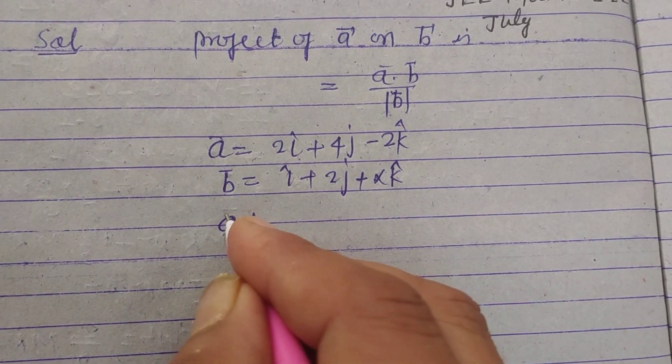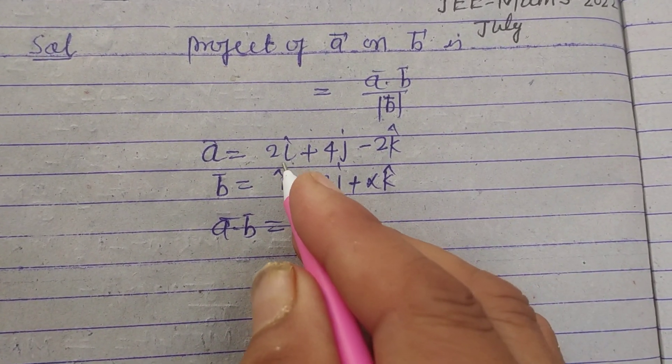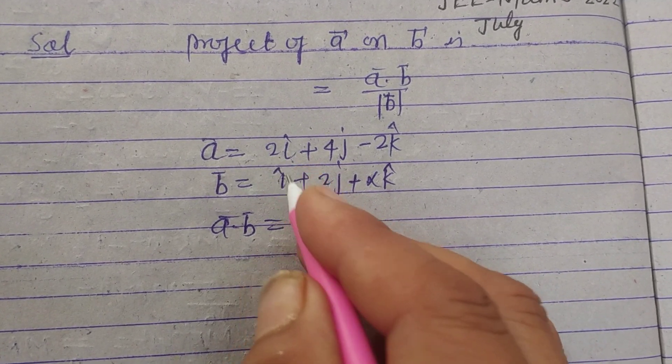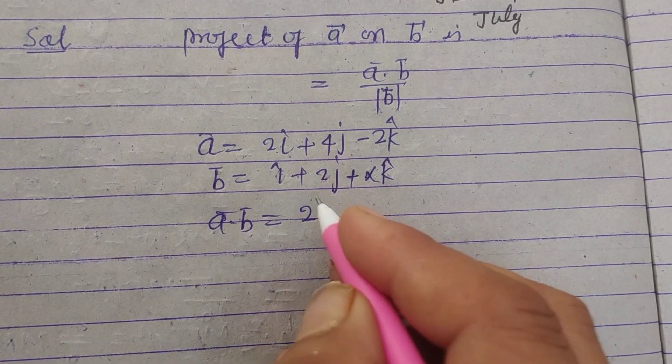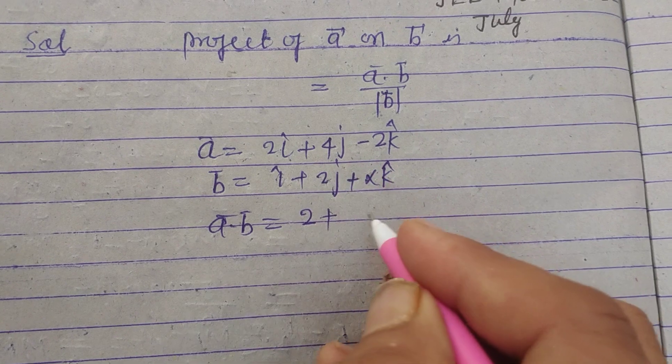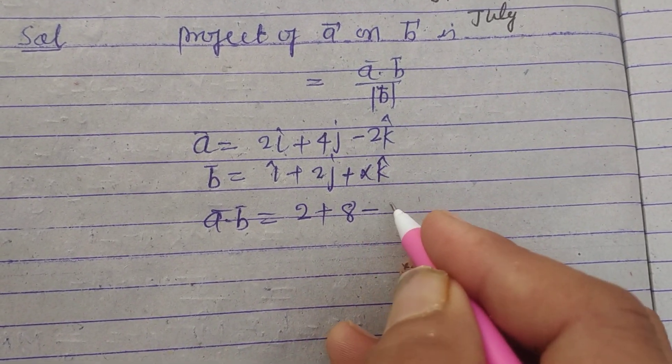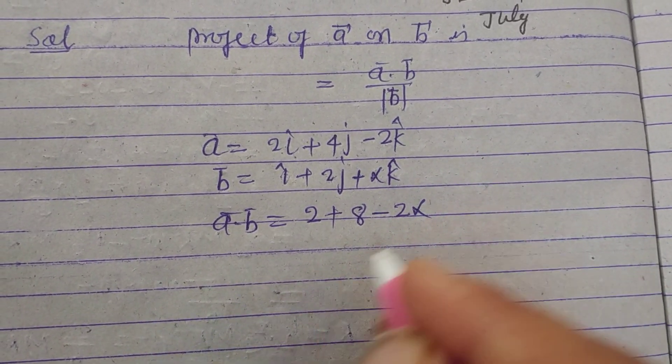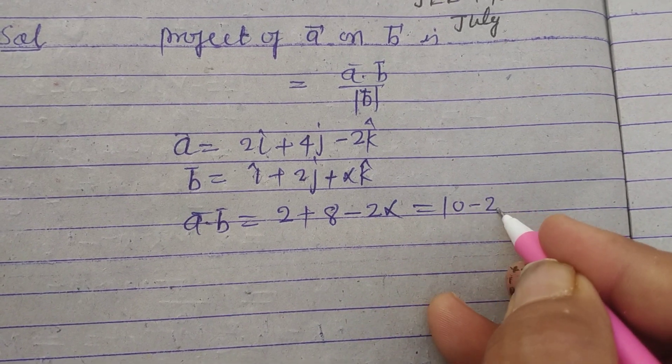So a dot b, first we find a dot b. So here i dot i is 1, so 2 plus 2 for j is 8 minus 2 alpha. So this is 10 minus 2 alpha.